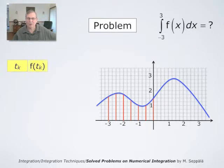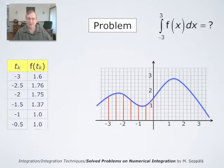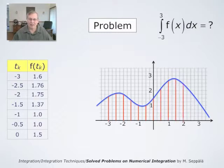And we have to form a table of the values of the function. So we have tk, the tag points: negative 3, then f of tk is about 1.6; negative 2.5, f is 1.76; negative 2, f is 1.75 approximately; negative 1.5, 1.37; negative 1, 1.0; negative 0.5, 1; 0, 1.5 approximately. And then we continue in the similar way on the right hand side for positive values of x.